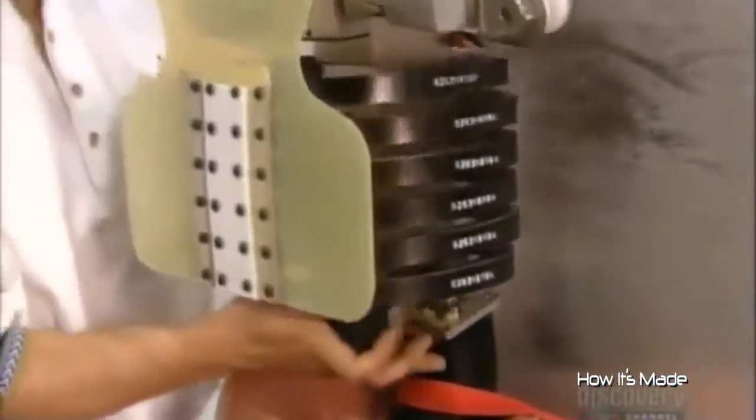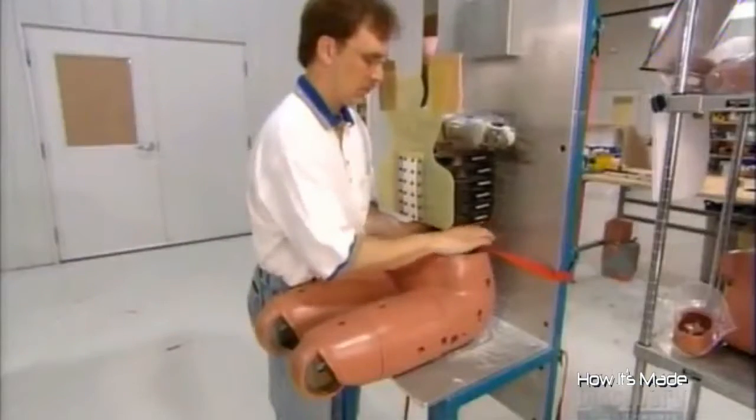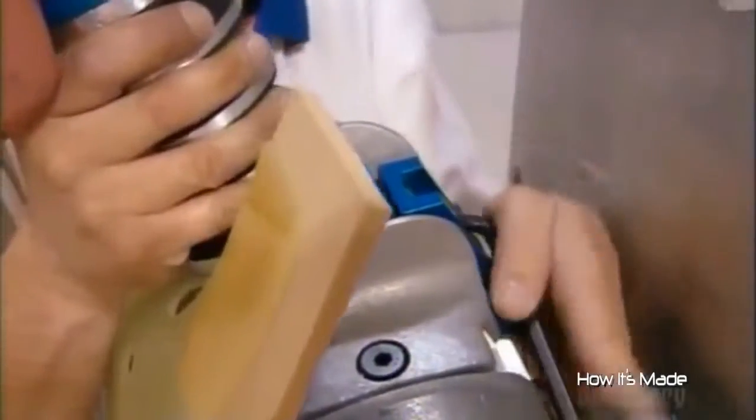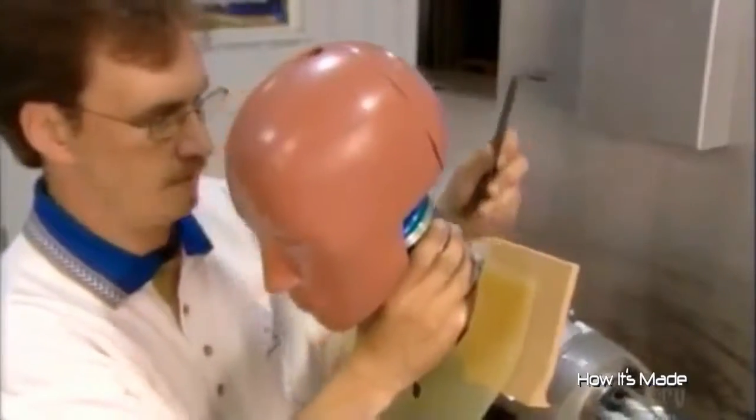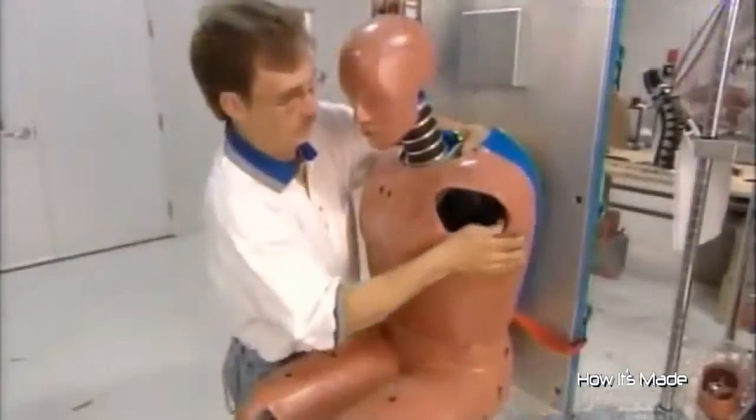Next up is the dummy's upper body. He bolts the thorax onto the pelvis, the head and neck assembly onto the thorax, then fits a vinyl jacket over the chest.